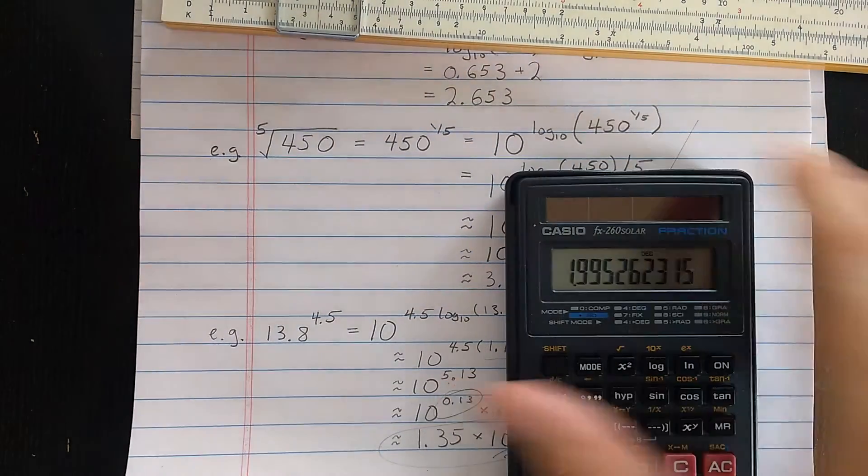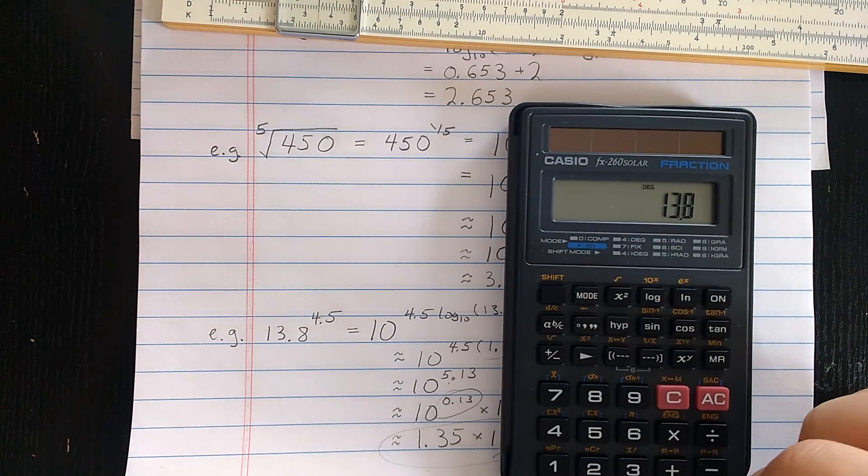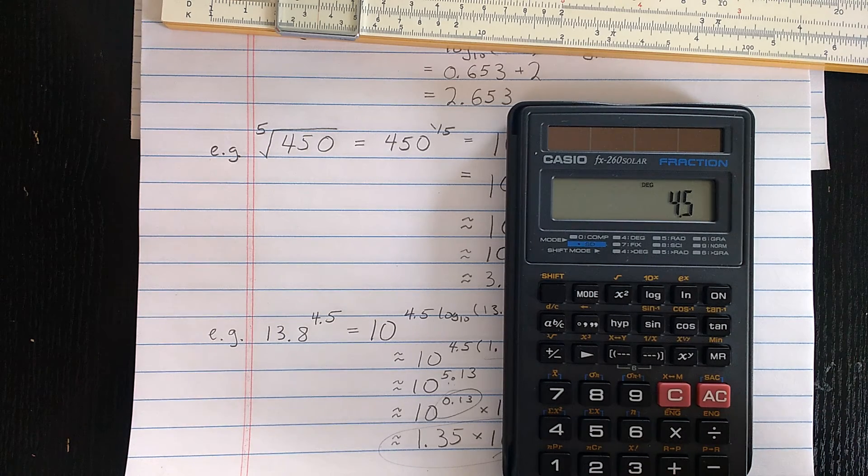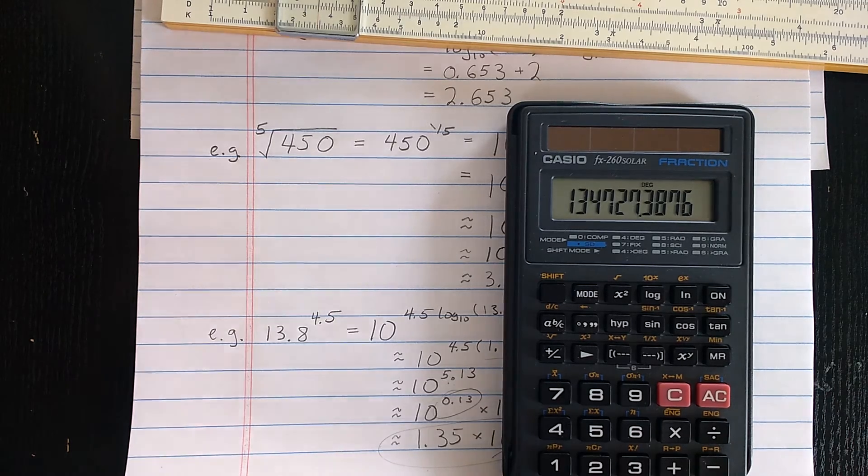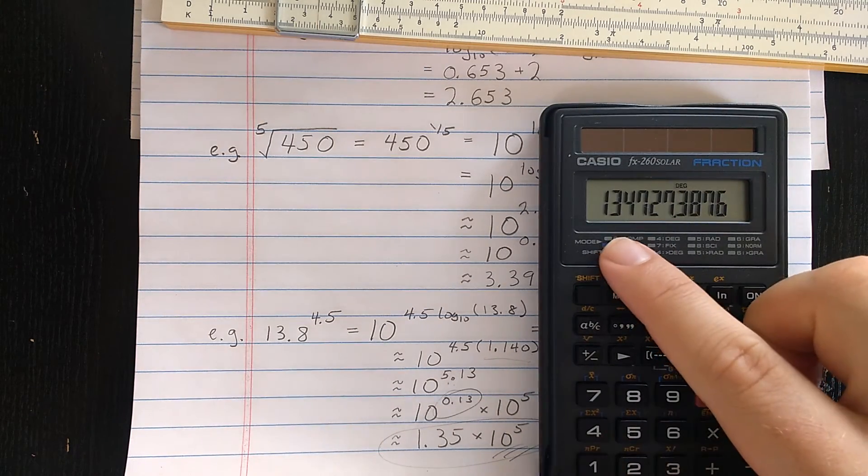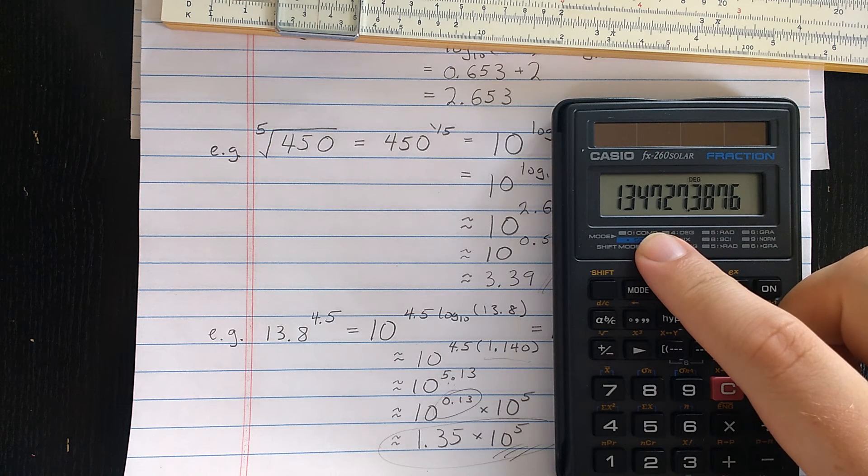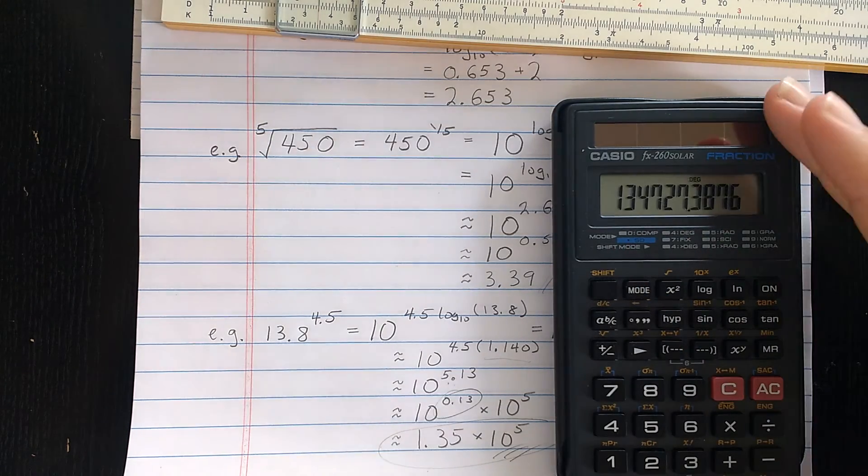Now, let's check that against the calculator. So 13.8 to the 4.5. All right. And let's see. I have 1, 3, 5. Those three digits are good, actually, all three. And then 10 to the 5th. Let's see. 1, 2, 3, 4, 5. That looks good, also.